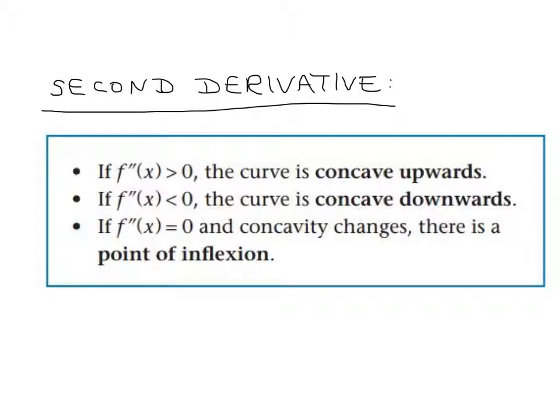If it's equal to zero and you test on either side and the concavity changes, so one is positive and one's negative, then there's a point of inflection. If it doesn't change, like that x to the 4 example we were looking at, then there's no point of inflection.